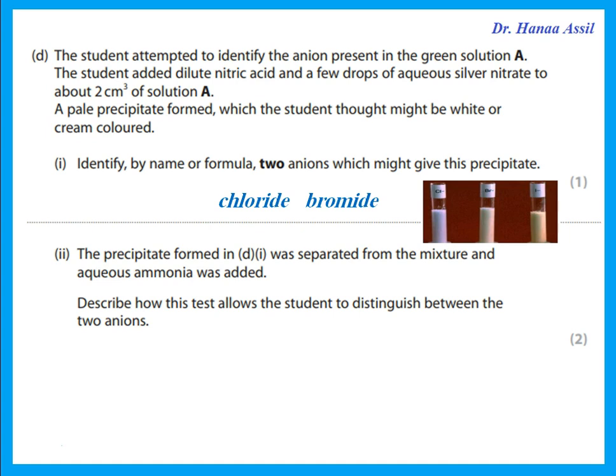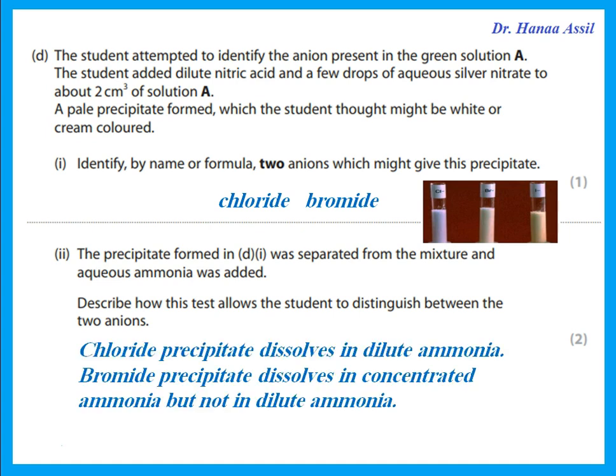The precipitate formed was separated from the mixture and aqueous ammonia was added. To distinguish between chloride and bromide: first add dilute nitric acid and silver nitrate — chloride gives white, bromide gives cream. Then add aqueous ammonia. The precipitate from chloride dissolves in dilute ammonia, whereas the precipitate from bromide will not dissolve in dilute ammonia — it dissolves only in concentrated ammonia.